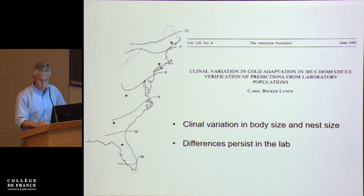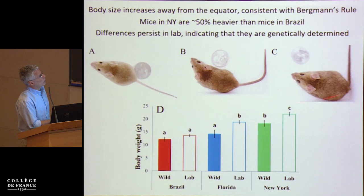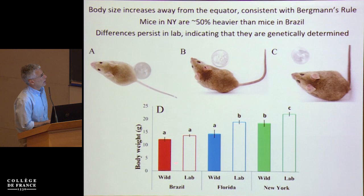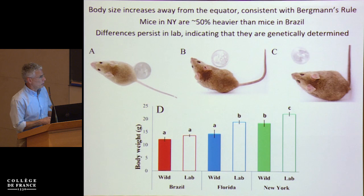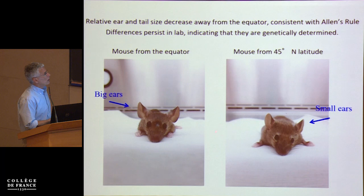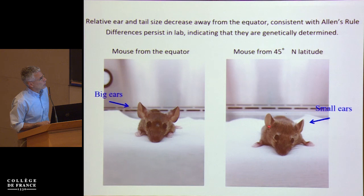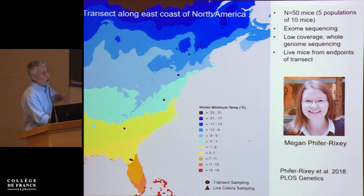Here are some phenotypic differences to give you a feel. These are mice from the equator, from central Florida, and from upstate New York. In the wild and in the lab we see clines in body size — these mice are 50% bigger than those mice. These are substantial differences that have evolved in just a few hundred generations. We see the same kind of pattern for body mass, body length, and BMI. We also see clines for the length of extremities, including ears and tails. Mice from the equator have big Mickey Mouse ears, and mice from 45 degrees north latitude have much smaller ears. The same differences are seen in tail length, and these persist in the lab.